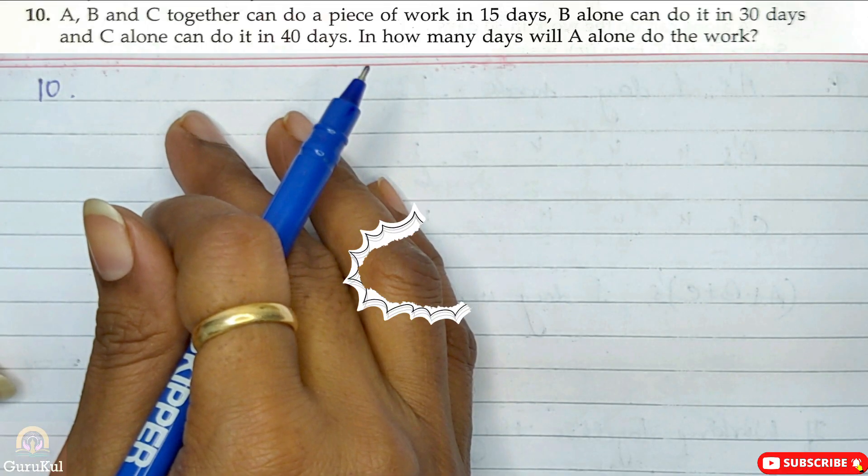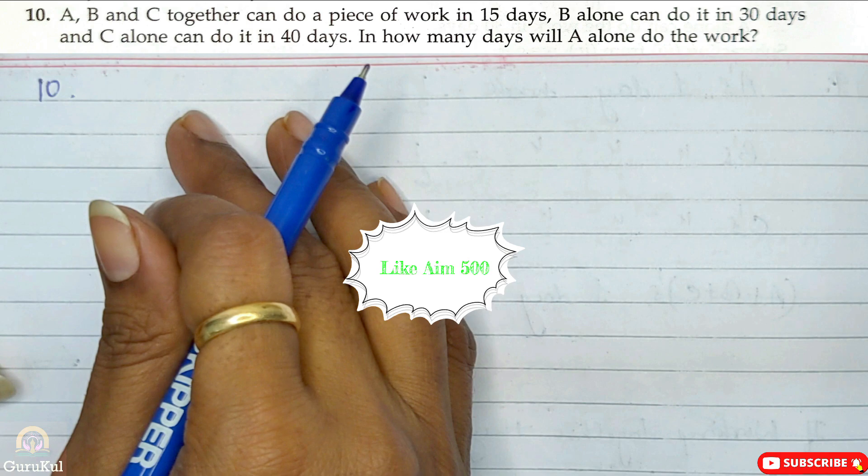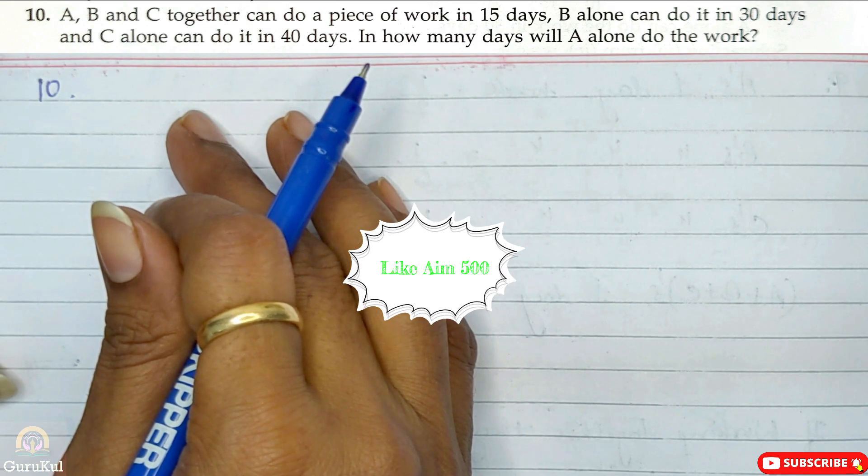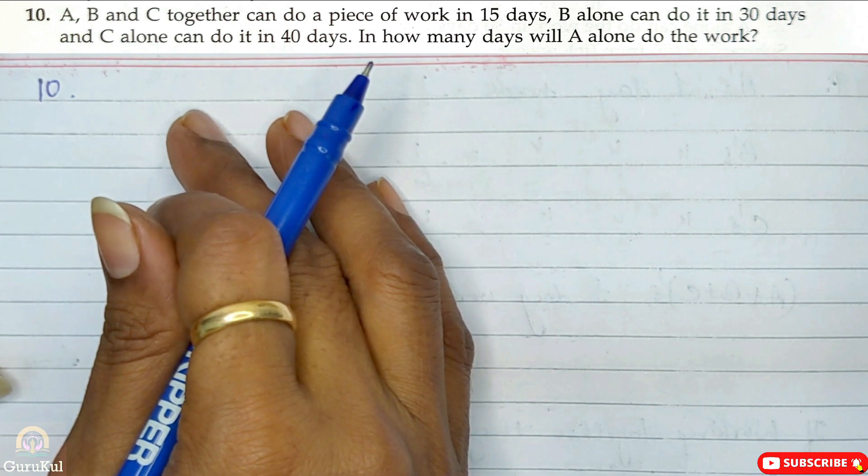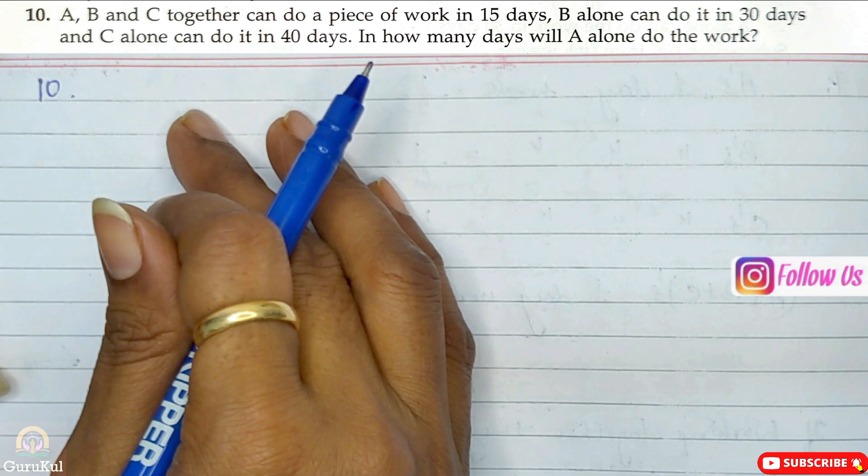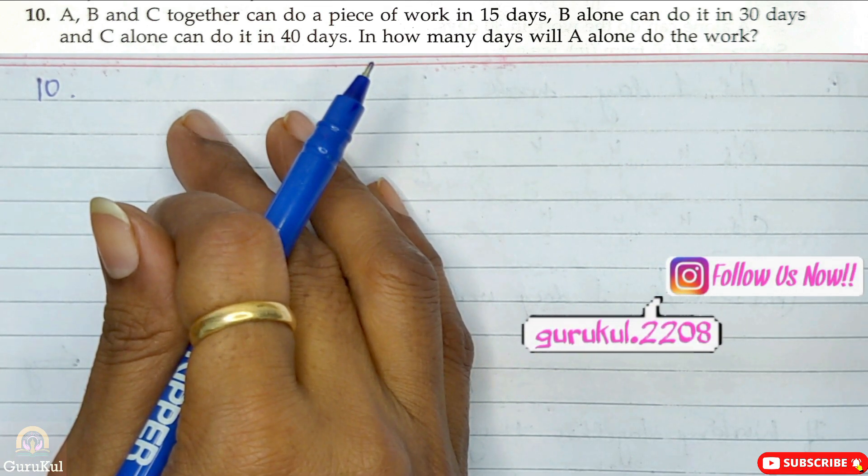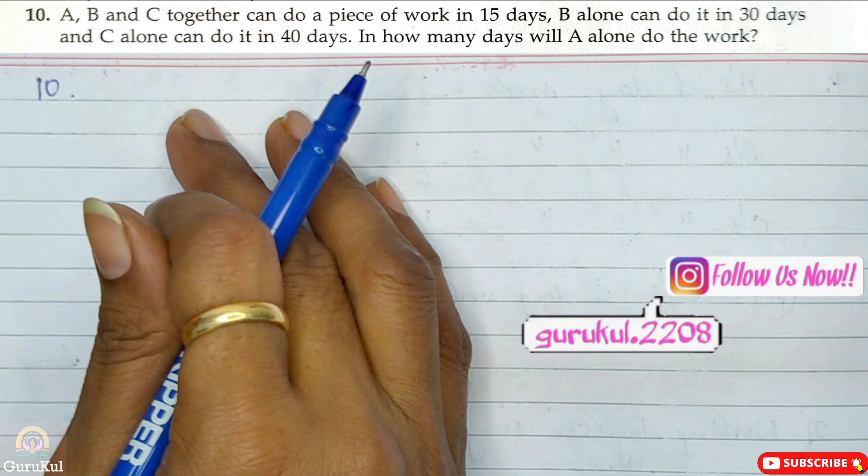Question number 10. A, B and C together can do a piece of work in 15 days, B alone can do it in 30 days and C alone can do it in 40 days. So in how many days will A alone can do the piece of work?